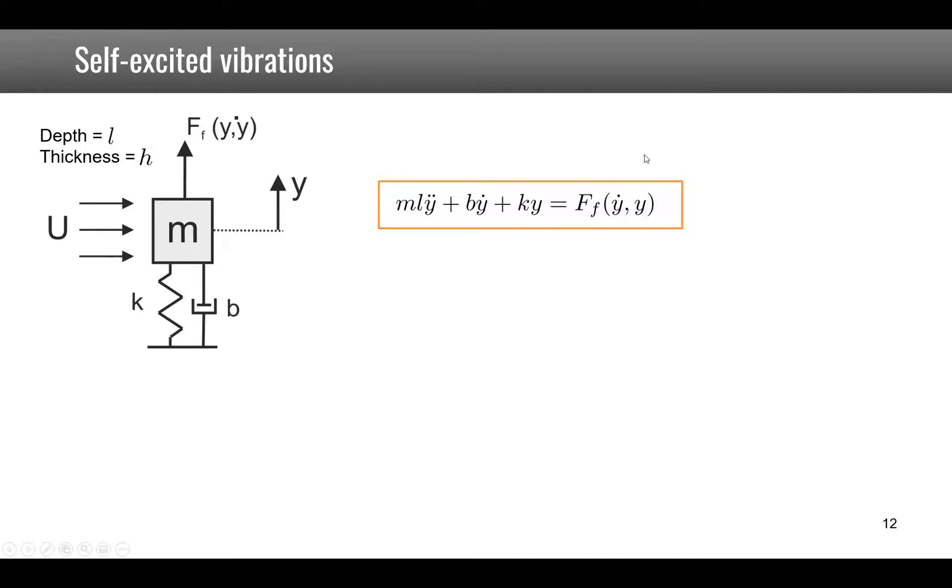Now if we explicit the force excited by the fluid we can see that it's made of two parts and it is of course a function of the density of the fluid, of the velocity of the fluid, and of the size of the body. So H and L are the thickness here and the depth across perpendicular to the plane.